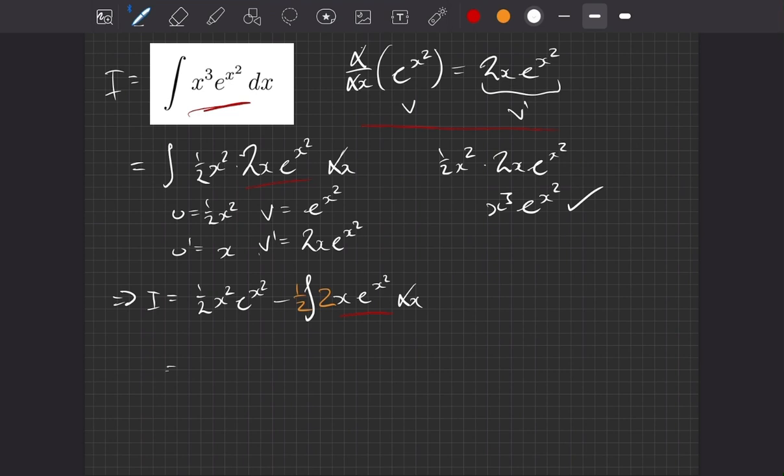So let's compute that. Our half x squared e to the x squared just comes with us. And now we're going to have take away half of our integral, which when we evaluate it, is just e to the x squared.